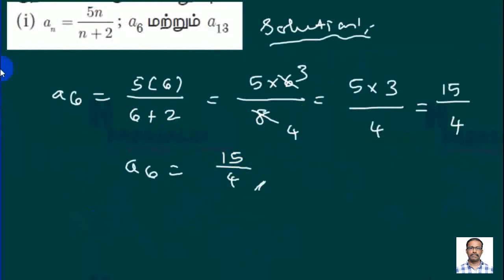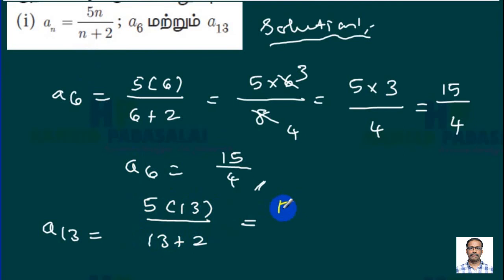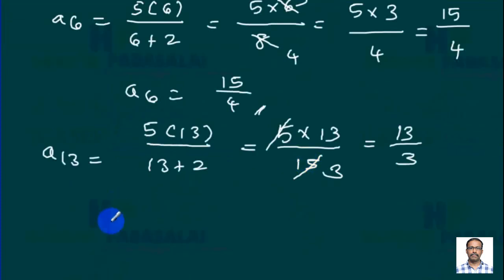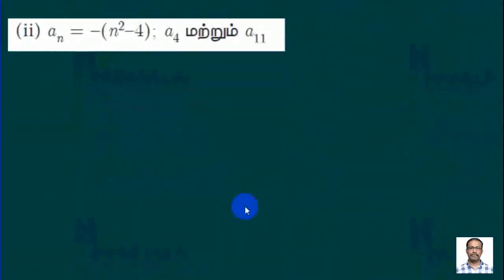Now for a₁₃, we substitute n=13 into the formula: a₁₃ = 5(13)/(13+2). This gives us 5×13 divided by 15. Simplifying, 5×13 is 65, divided by 15, which reduces to 13 divided by 3. So a₁₃ = 13/3. Now we move to problem number 2.